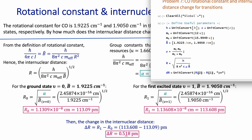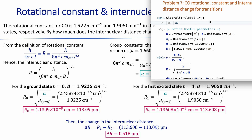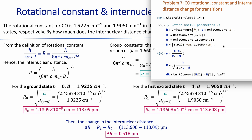From there I can calculate the difference between those two values by taking the second element in the array minus the first element. That means the internuclear distance for the second wave number minus the internuclear distance for the first. I convert this into picometers to match the values from the hand calculation.